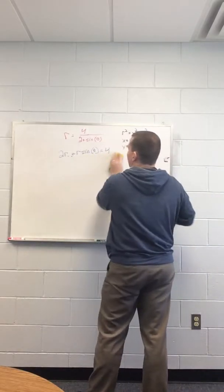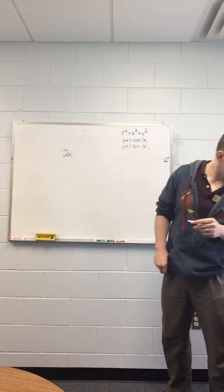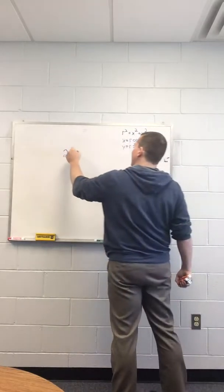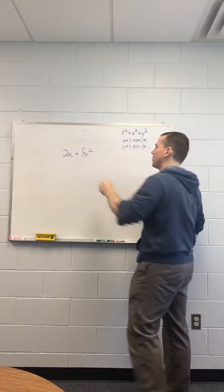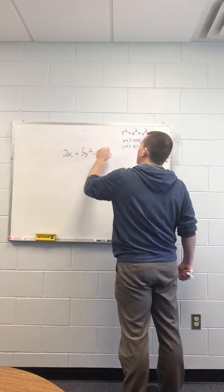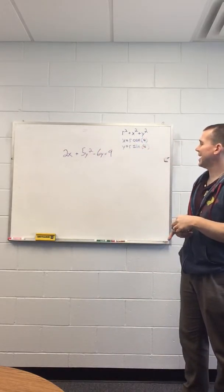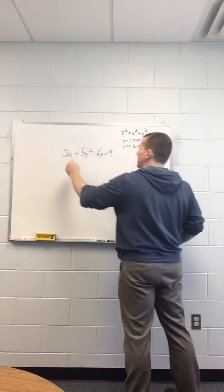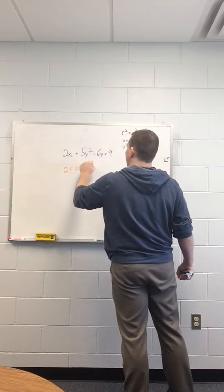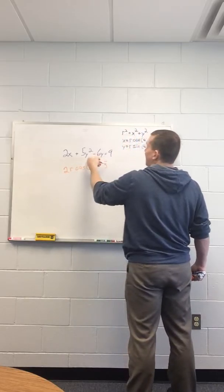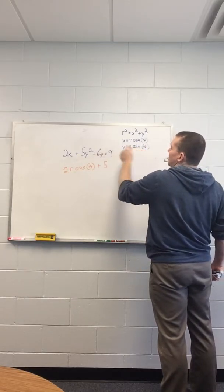The other one, 2x plus 5y squared minus 6y equals 9. And we want to convert that to polar coordinates, polar equation. And in this case, you can do a direct conversion. That's 2x is R cosine theta. So 2R cosine theta plus 5y squared. Here, just make sure you're at your algebra correct.